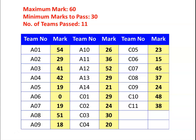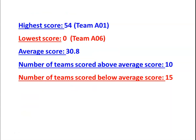Under the analysis: maximum mark is 60, minimum to pass is 30 marks, and number of teams that passed is 11. Team scores were: 54, 29, 41, 42, 19, 0 — one team got 0 because all three students had been absent for several earlier classes — then 19, 51, 18, 26, 36, 52, 29, 21, 29, 24, 30, 20, 23, 15, 45, 37, 24, 48, and 38. The highest score is 54 by team A01, the lowest is 0 by team A06, and the average score is 30.8. Ten teams scored above average and 15 scored below average.